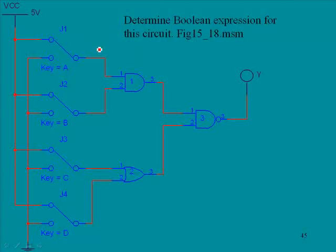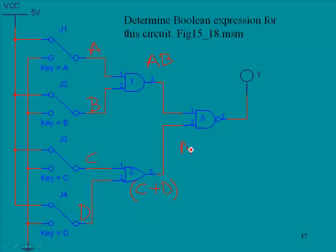Here we have another circuit with inputs A, B, C, and D. Out of the AND gate we're going to have AB. Out of the OR gate we're going to have C plus D. Then these two inputs are going to be NANDed together at the output, so we're going to have AB ANDed with (C or D), and the entire output is going to be inverted.